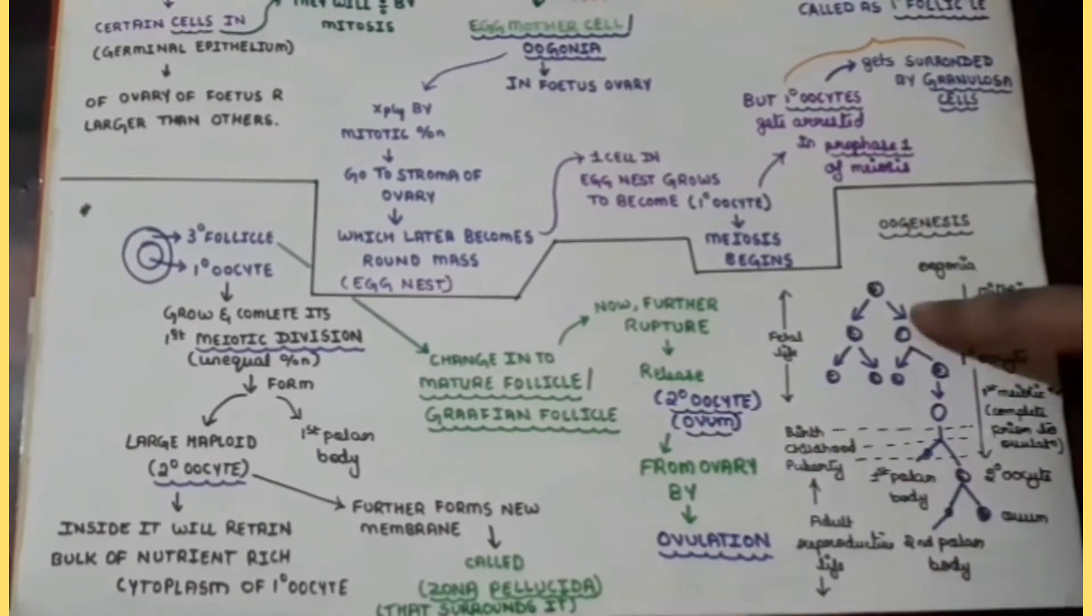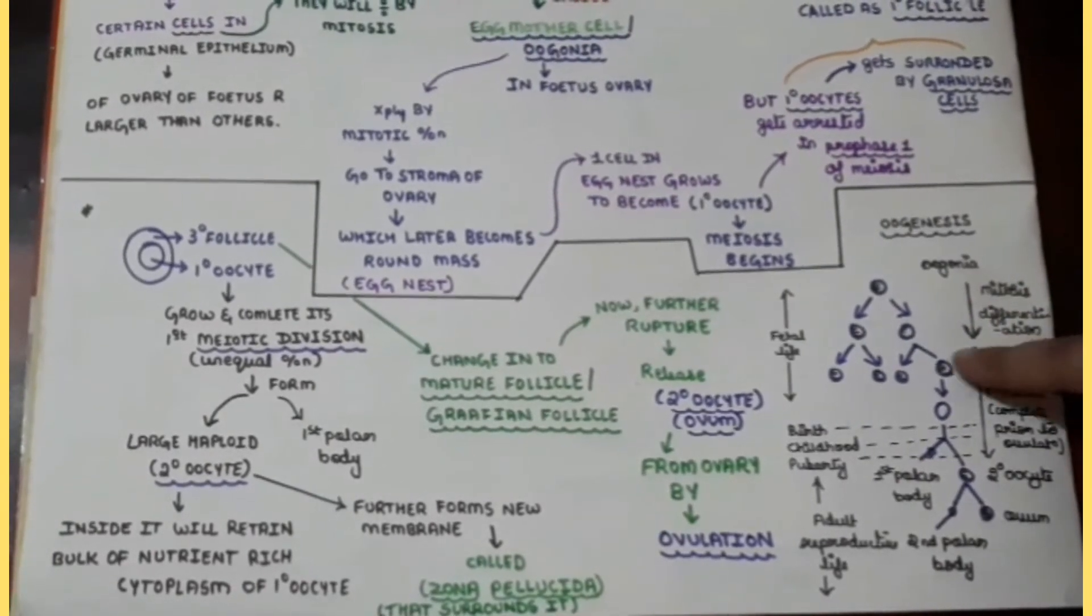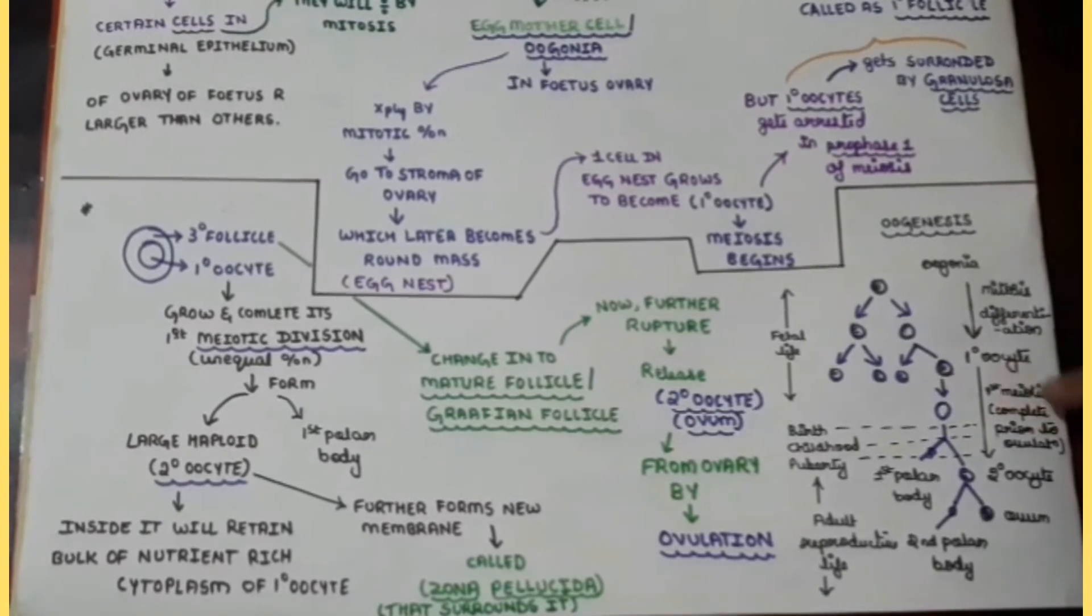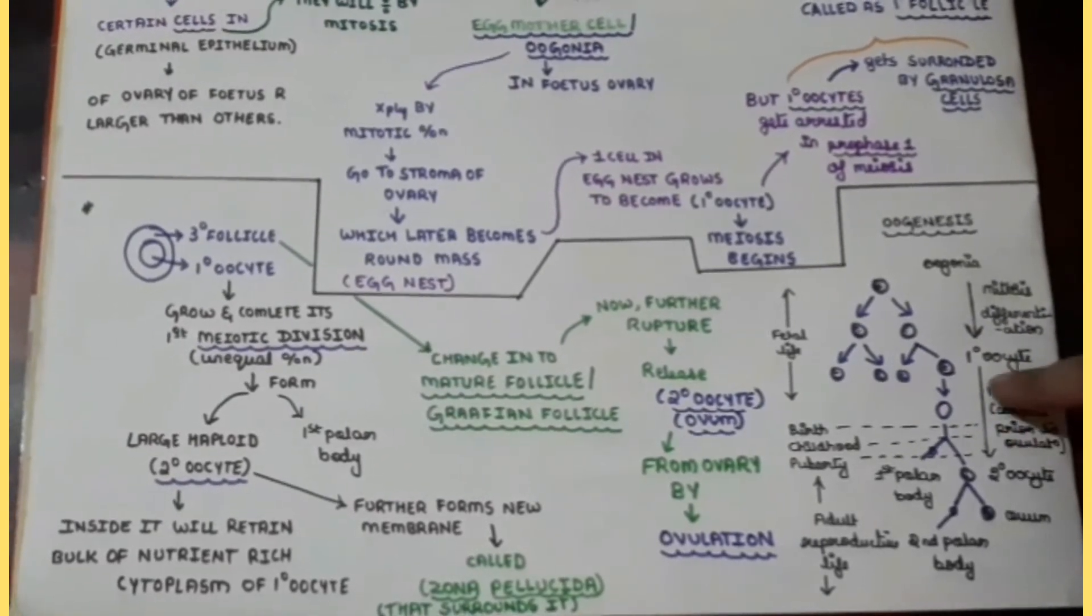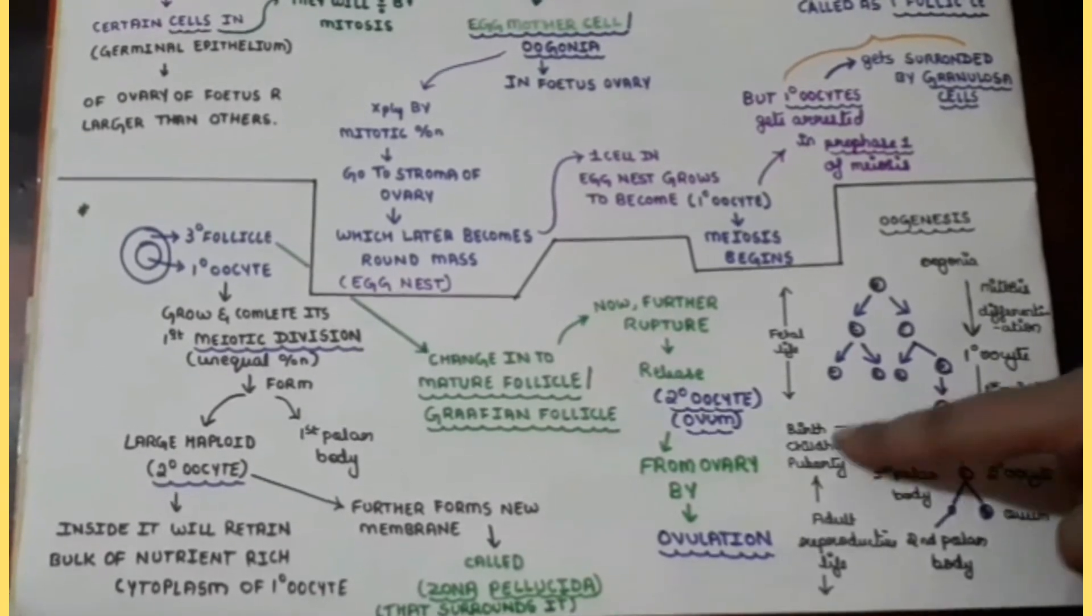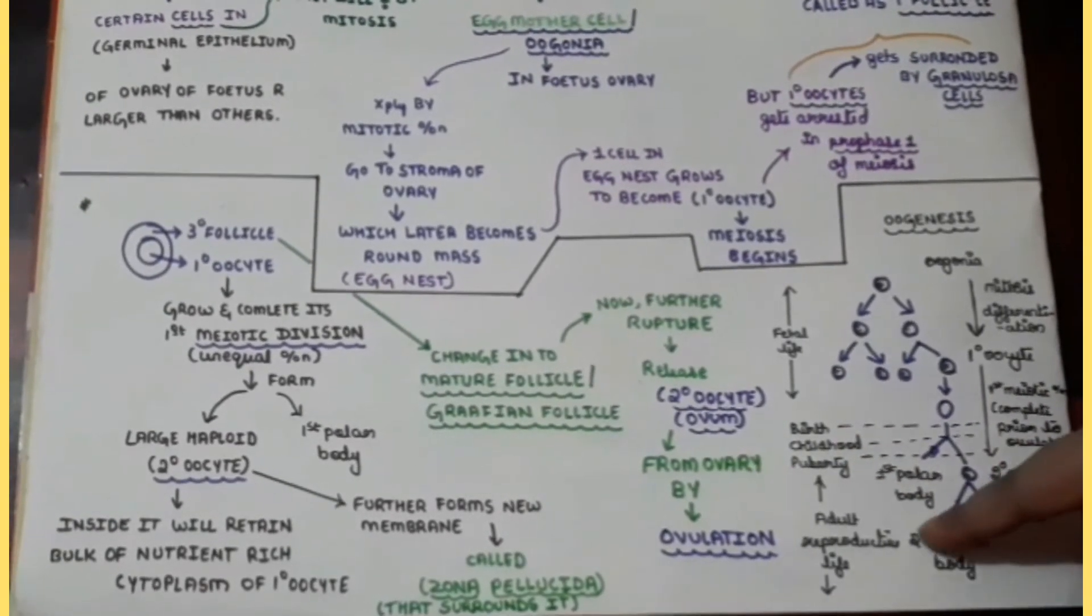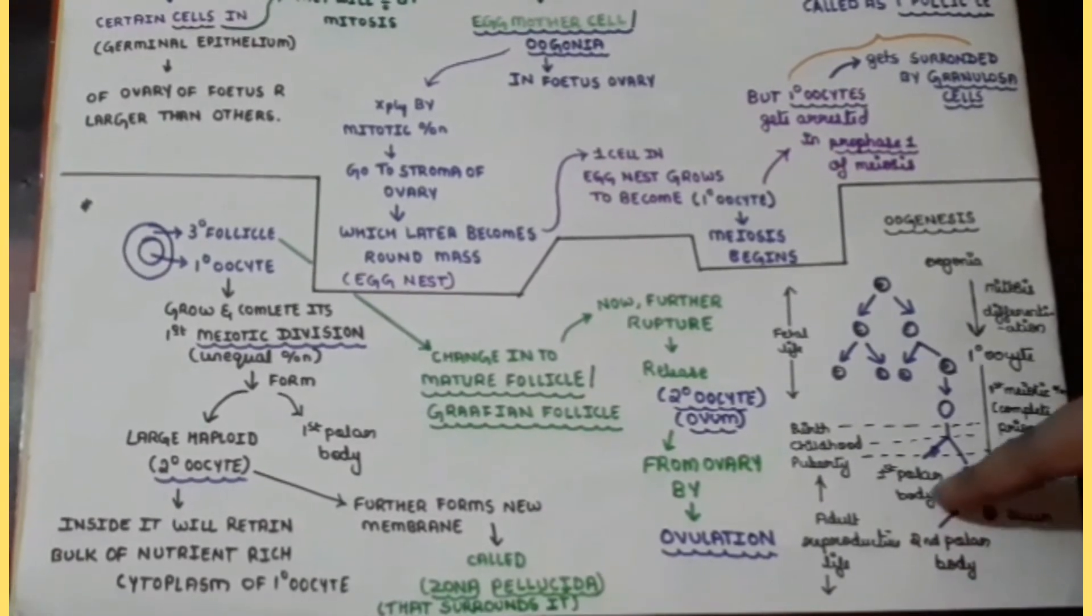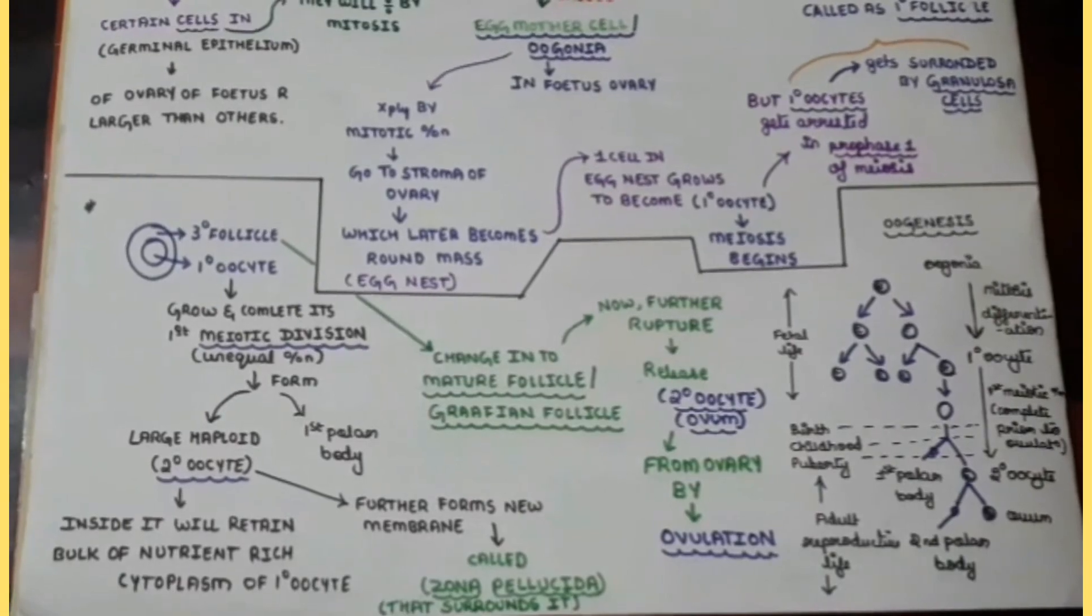This is a flow chart which you can see where the oogonia will undergo mitotic differentiation in order to form the primary oocyte and it will undergo the meiosis in order to form the polar body and the secondary oocyte which will further form the ovum and the second polar body. So this much if you write it's enough for your answers.